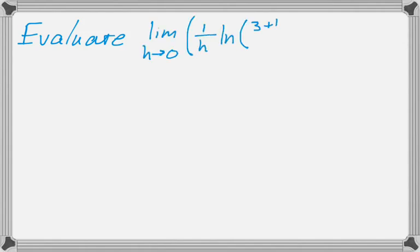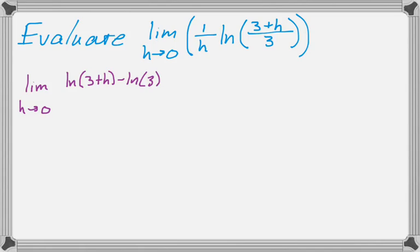Let's take a look at one more here. So if I want to evaluate the limit as h approaches 0 of... This is one of my favorite tricks that you can do to disguise a derivative, and it involves using properties of natural logs. So I'm going to rewrite the limit. The natural log of a quotient becomes a difference. So it's going to be the natural log of the numerator minus the natural log of the denominator, and then still all over h.